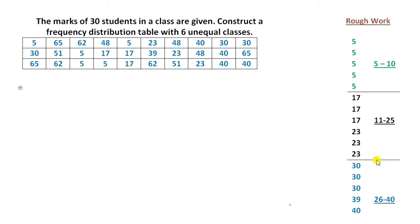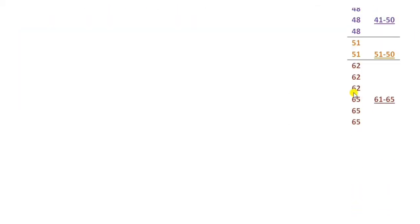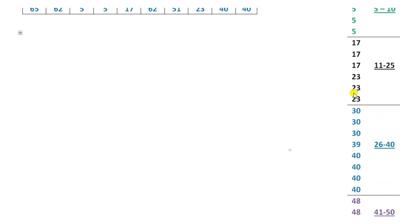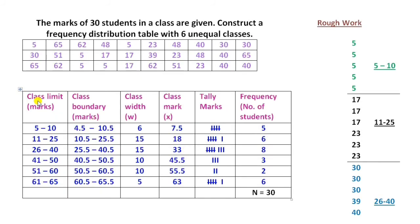In my last video, I showed you how to calculate a frequency distribution table for equal classes. You have to use the same process for frequency distribution table here also. I have computed the table already. The first column is class limit. Don't forget to put the unit, which is marks. Under this heading, 5 to 10 is my first class.